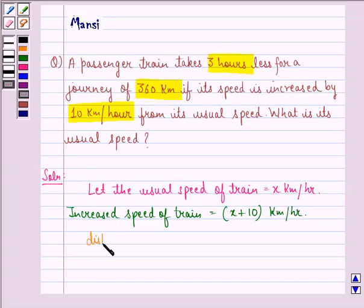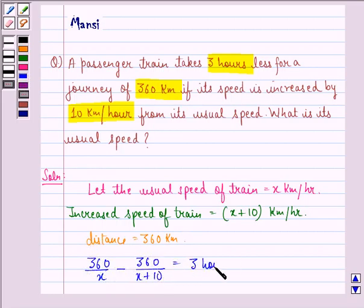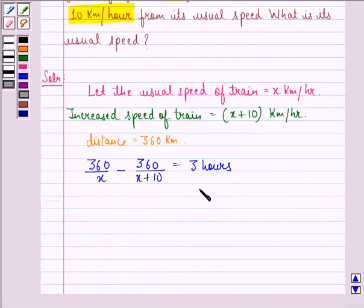Distance is given to be 360 km. Now, from this question, 360 by x minus 360 upon x plus 10 is equal to 3 hours because time is equal to distance upon speed.